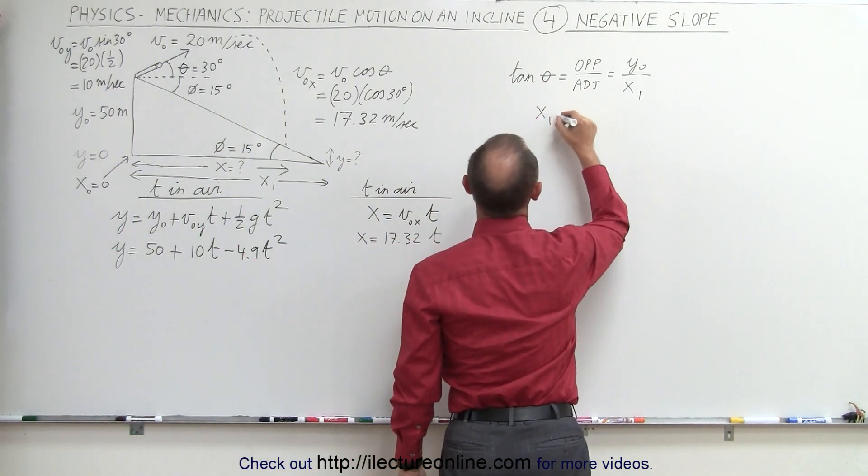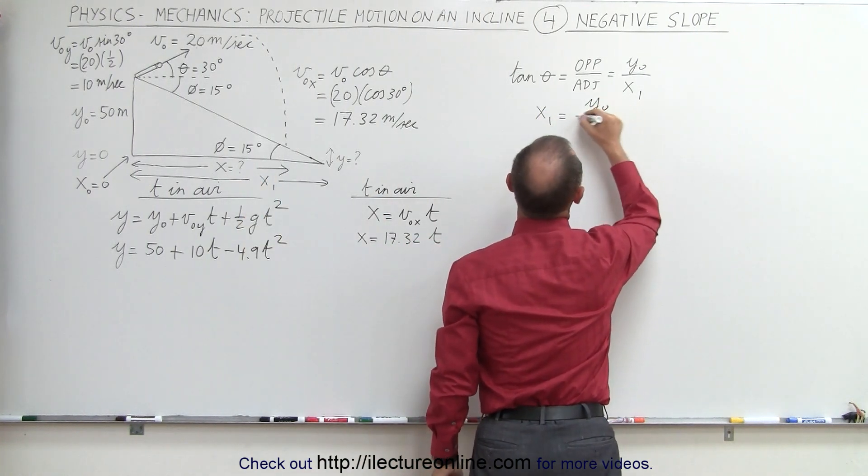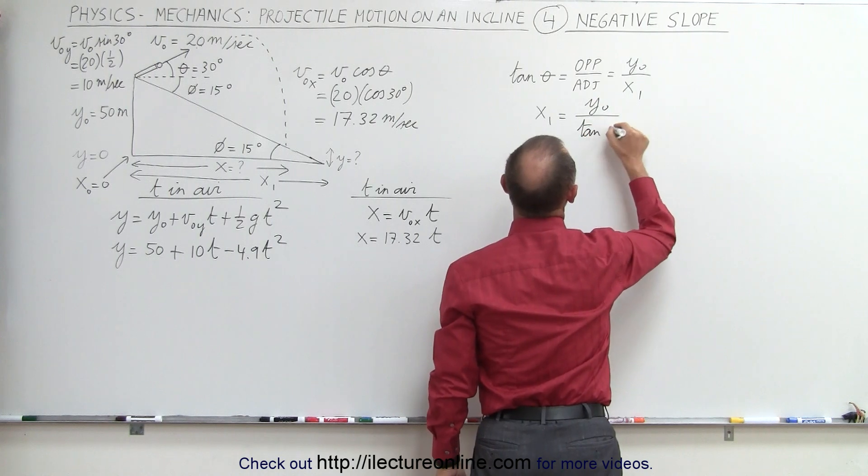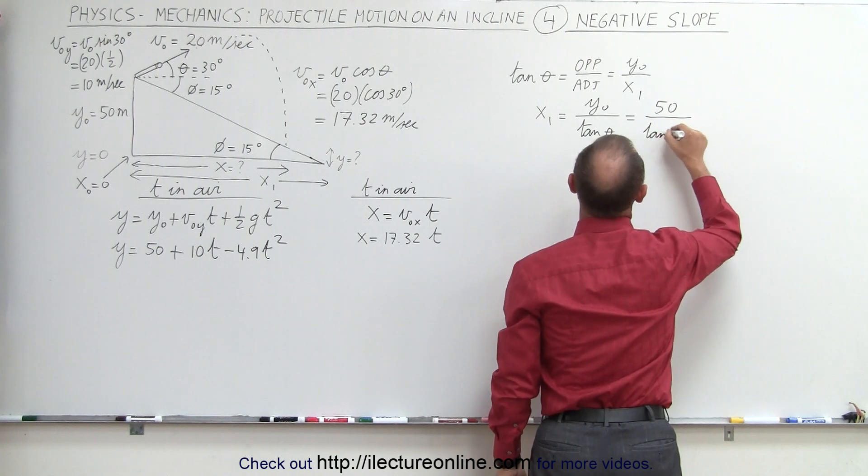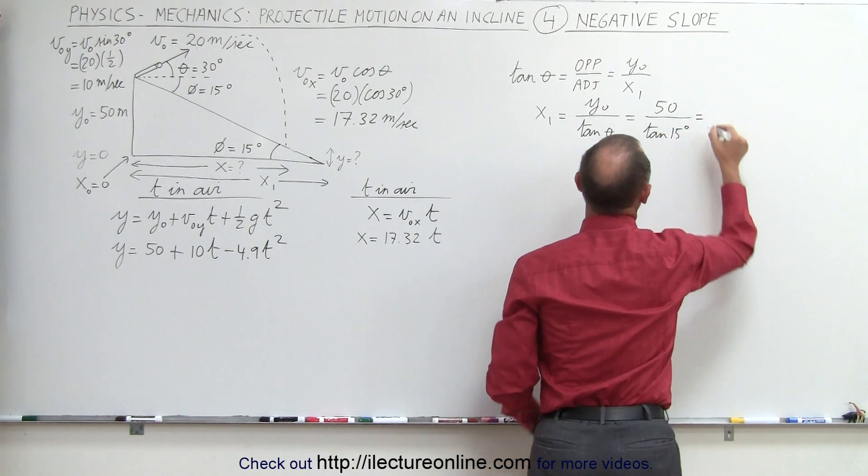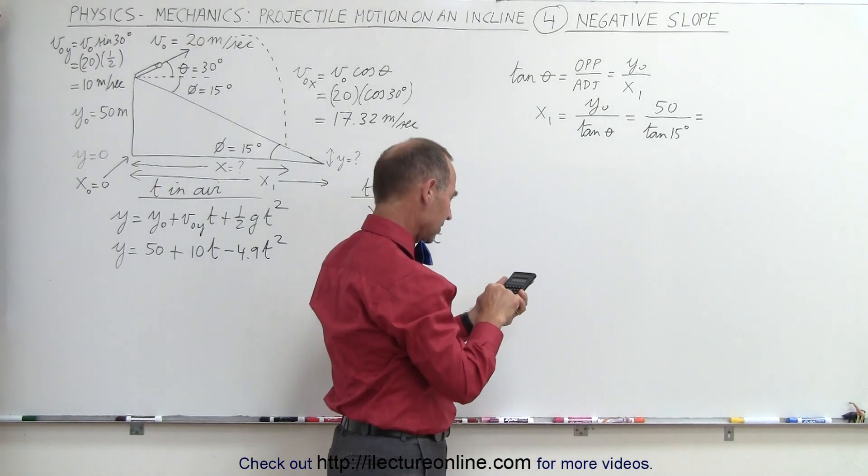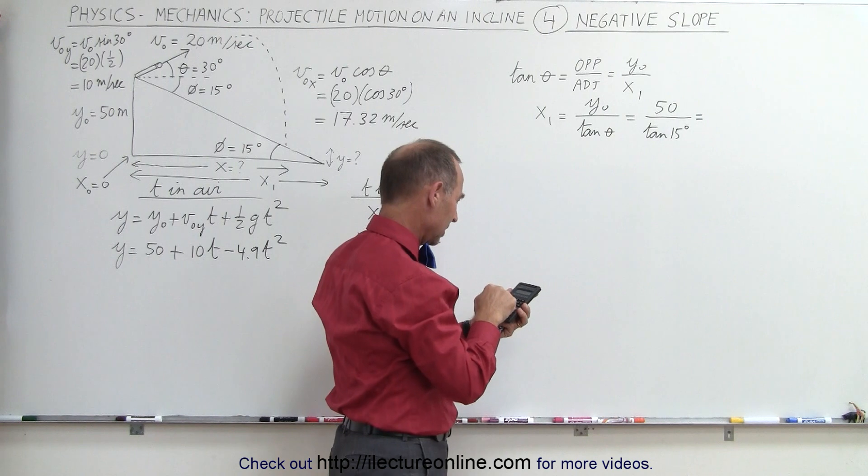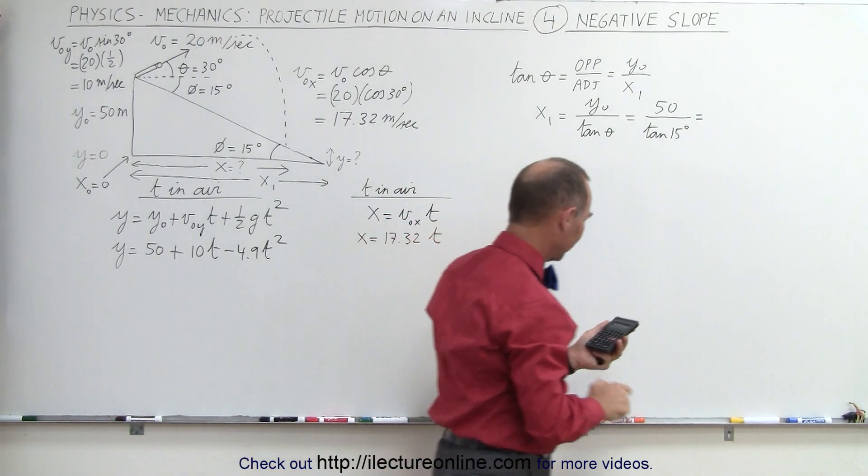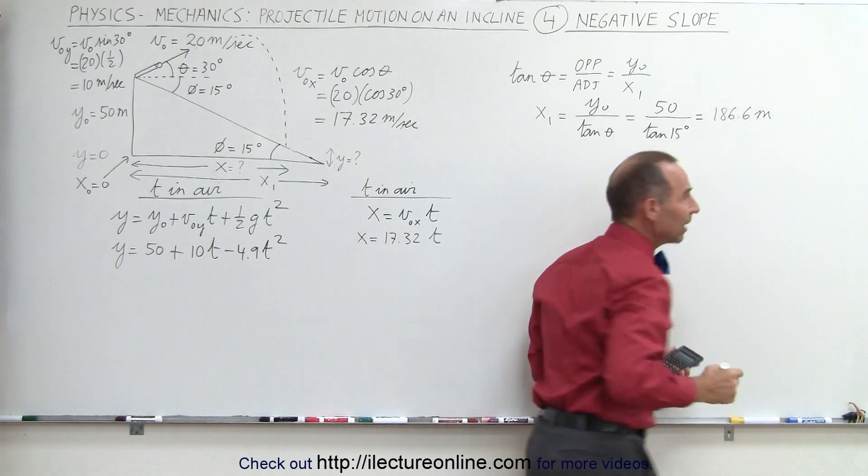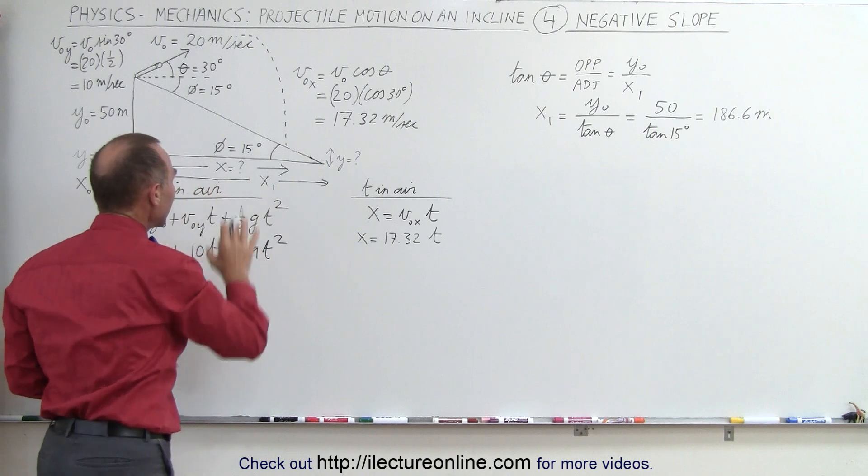We can say that x sub 1, the length of the incline in the horizontal direction, is equal to y sub not divided by the tangent of theta. And y sub not, that's the 50 meters, divided by the tangent of 15 degrees. And now let's see here. The calculator. So 50 divided by the tangent of 15 equals and we get 186.6 meters. So that's the length of the incline.